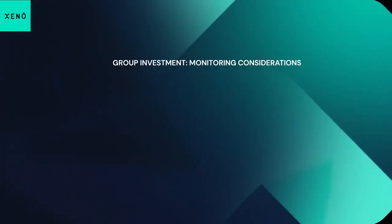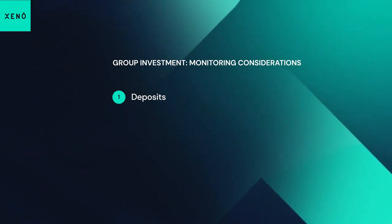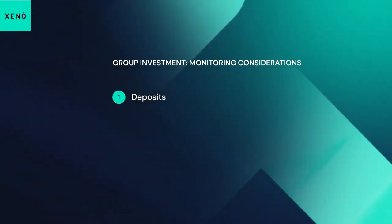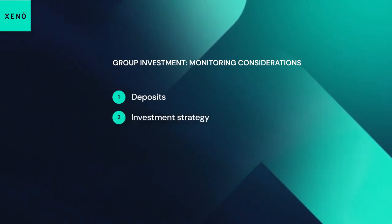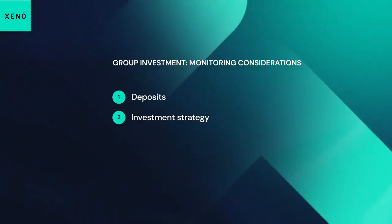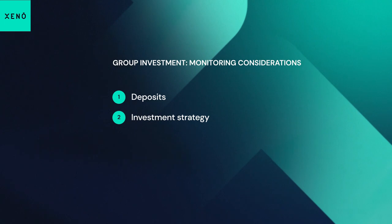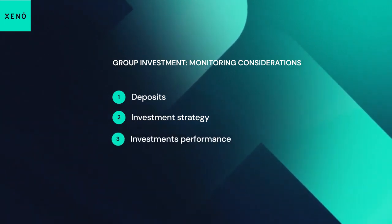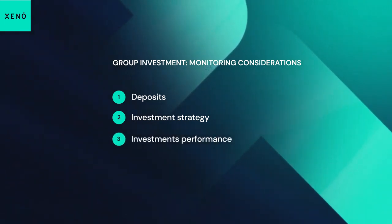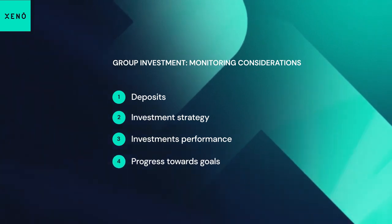Monitoring is so important for groups because it ensures transparency. So there are four things here to do. The first thing that we have to monitor and have transparency on is the deposits from each member and then the collective group deposits. Two, the investment strategy that we have used to execute the investments. Three, the performance of those investments, and four, the progress towards the group's collective goals.